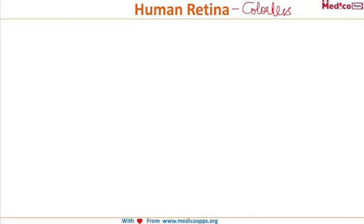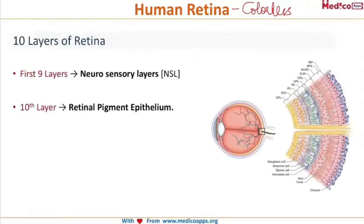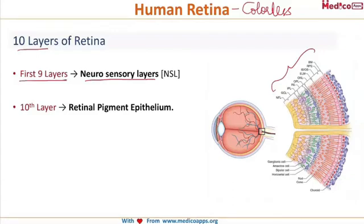The retina is made up of ten layers. It is broadly classified into two parts: the first is the neurosensory retina, composed of the anterior nine layers, and the last — the tenth layer — is the retinal pigment epithelium, referred to as the RPE.